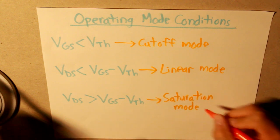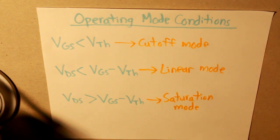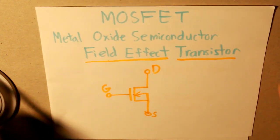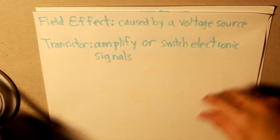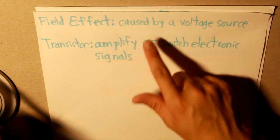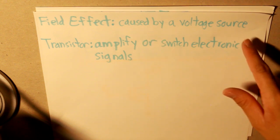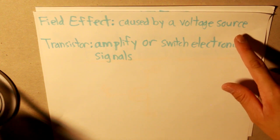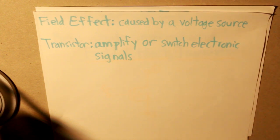So, there you have it. The most simplest way to explain what a MOSFET is. And the MOSFET, as I've explained, is the metal oxide semiconductor field effect transistor. And it is something that is able to amplify or switch electronic signals that is caused by a voltage source, also known as the voltage gate source. I hope you guys enjoyed this video, and I'll see you next time.